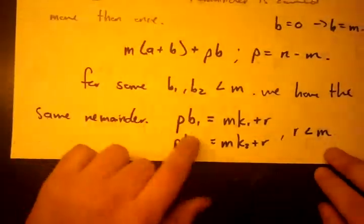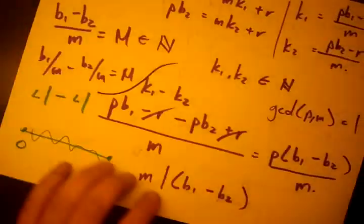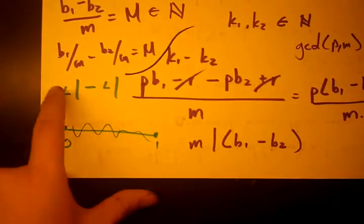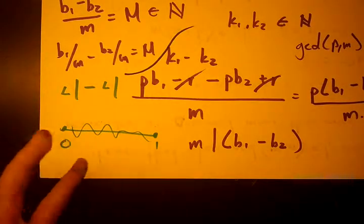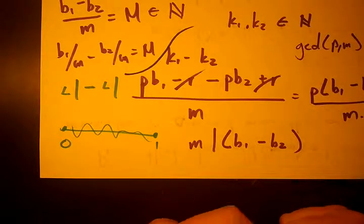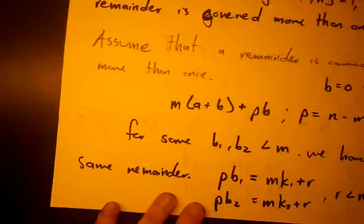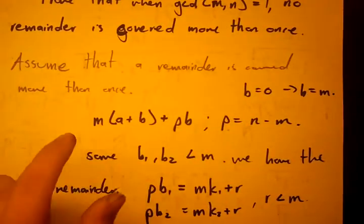Is it possible to get, if you subtract something less than 1 in this range, something less than 1 in this range to get a whole number? We can't. We've arrived at the contradiction, which says that our original assumption, assume that a remainder is created more than once, is false.